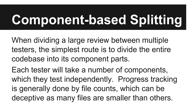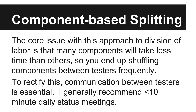Now let's switch gears and talk about division of labor. Source code review projects can be divided effectively with work. The first approach is to divide the code base into its component parts — for instance, one person could take the web front end code while another takes business logic. Each person will test their components separately. Progress tracking is generally done by file counts, which can fall down if you don't look for overly large files. The main issue is that many components will take less time than others, so you end up shuffling components between testers. To get around this, have a short daily status meeting to make sure you all stay on the same page.